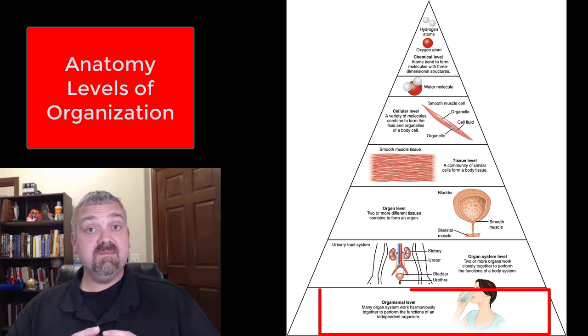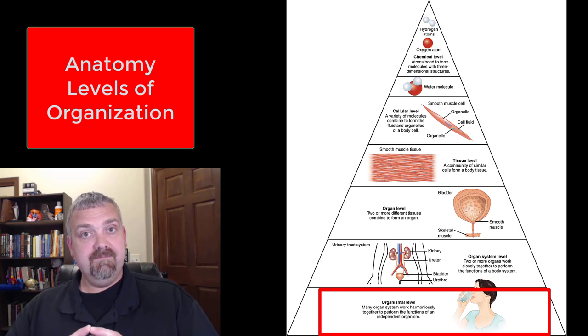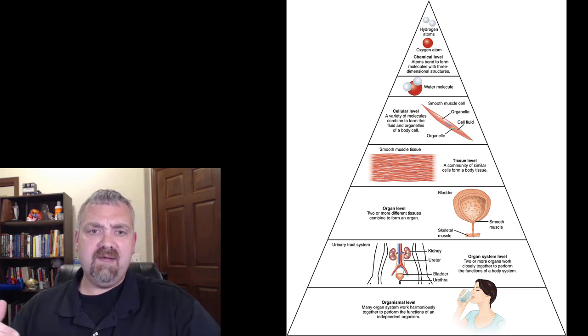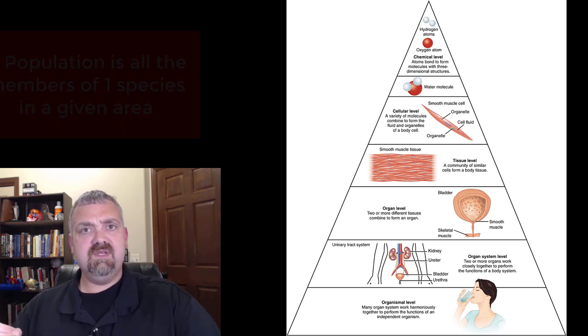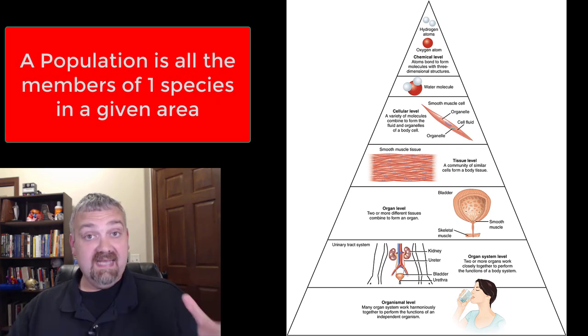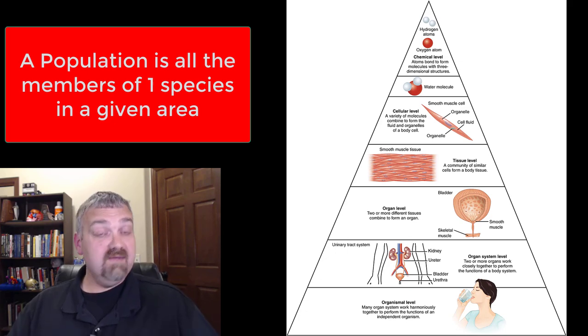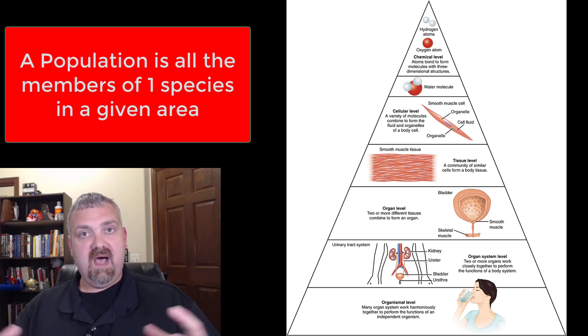When you put those 11 organ systems together, we now have an organism, which would be the human in our case. Before we're done though, I want to take it a couple steps further because when you take a population, that would be all of the same organisms living in a given area. So obviously the population of humans would be the next step here.